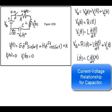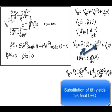Here's the current voltage relationship for the capacitor. The capacitance times the rate of change of voltage across the capacitor is equal to the current through the capacitor. Substituting this current into that equation yields the final differential equation.